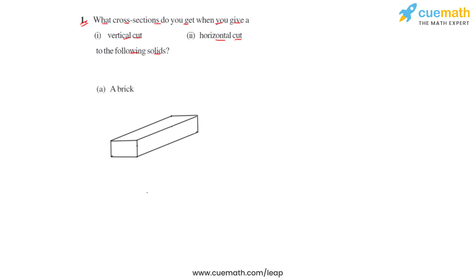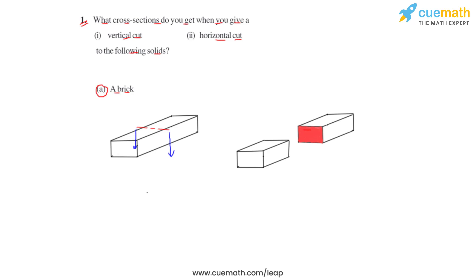The first solid is a brick. If we give a vertical cut to this solid along this line, the solid would be divided into two parts. The cross section in this case would be a square.